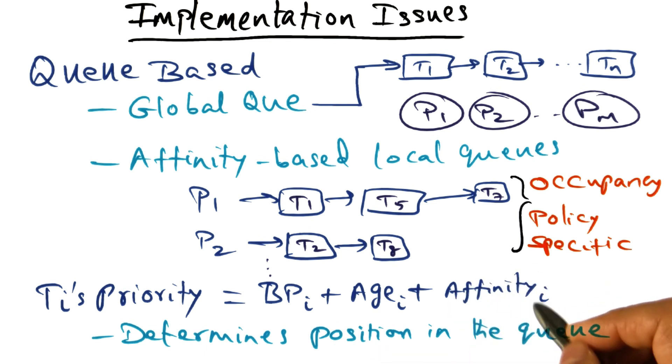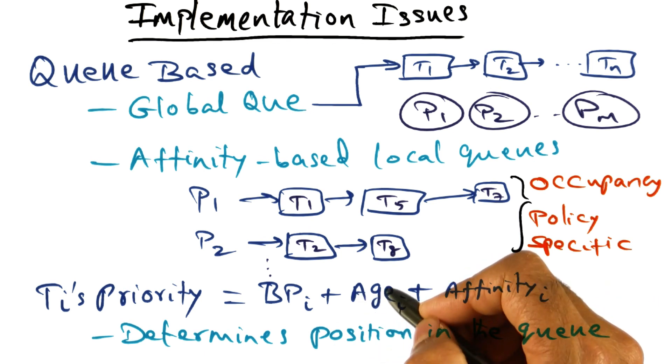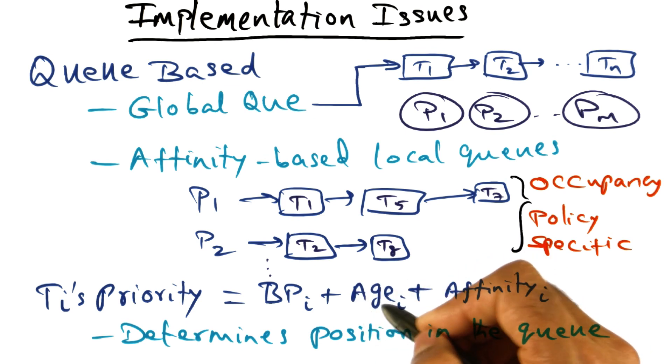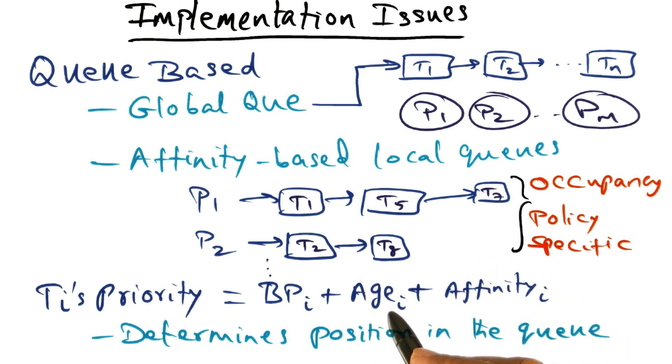And of course then you take the affinity into account. And in addition to that, there is age coming in. And this is sort of like a senior citizen discount. If a thread TI has been in the system for a long, long time, you want to get it out of the system as quickly as possible.